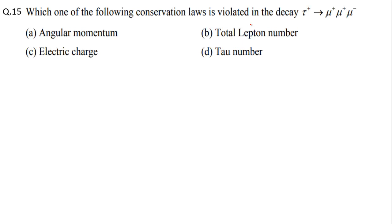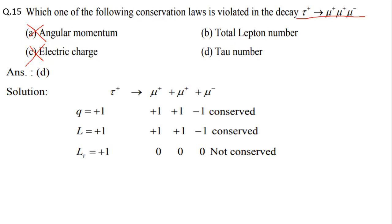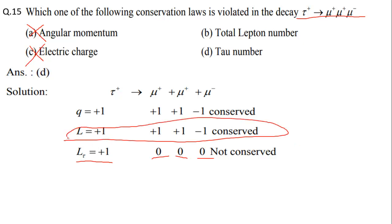Question 15: Which conservation law is violated in this decay? Electric charge is conserved, so option A is not it. Angular momentum cannot easily be checked here. Checking tau lepton number: L_τ = +1 on the left, 0 for other particles — not conserved. Total electron number is conserved since all are electrons. The correct answer is option D — tau lepton number is violated.